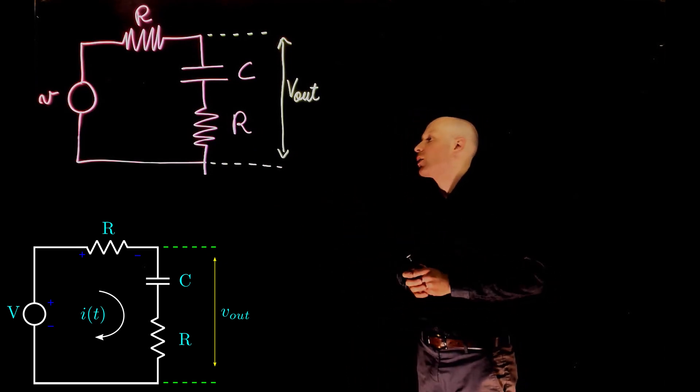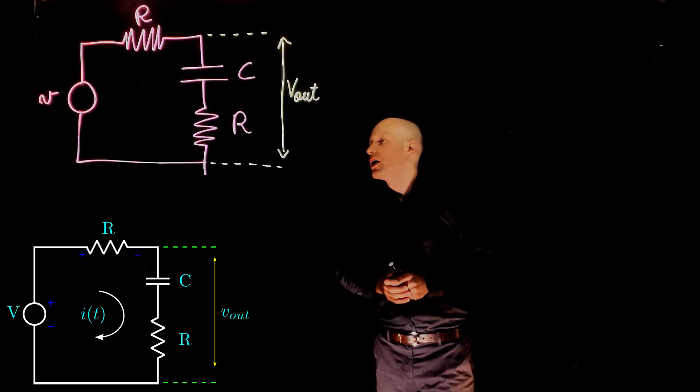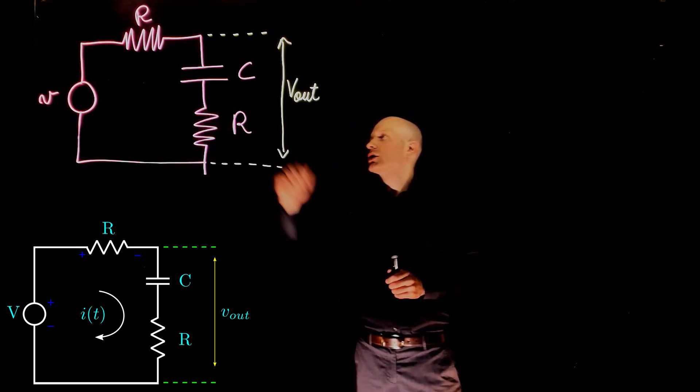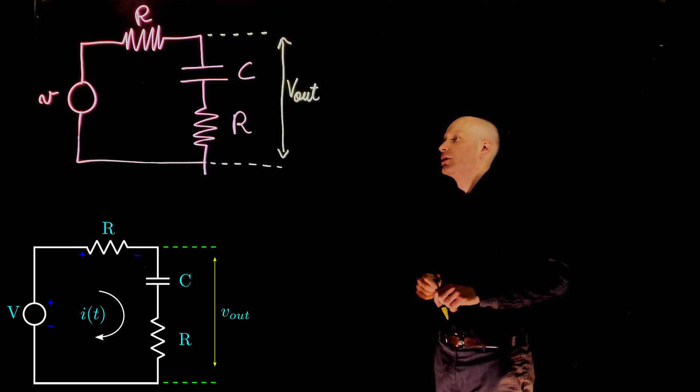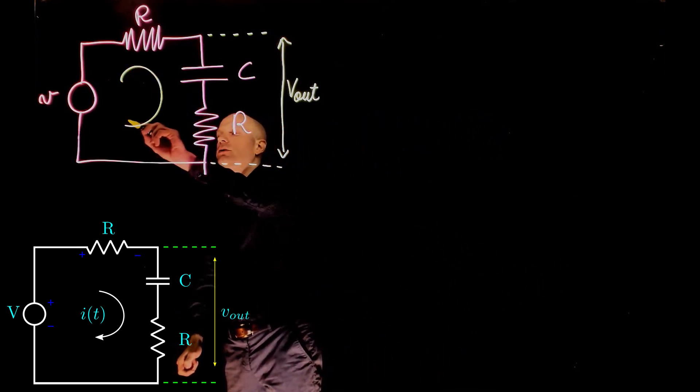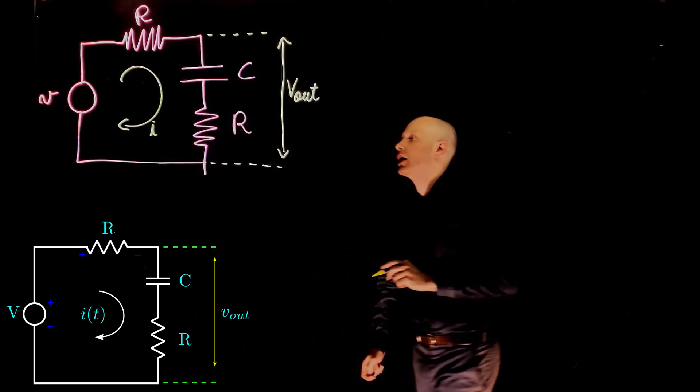We are interested in the equations that describe the behavior of this system, both Vout and the relation between the voltage and the current through that mesh. We can specify a current here, in this loop, and call that the current I.